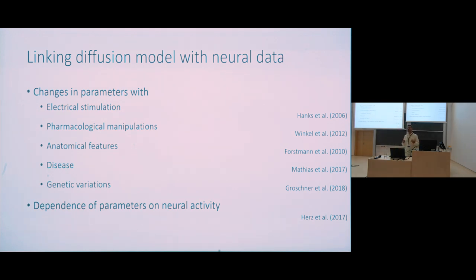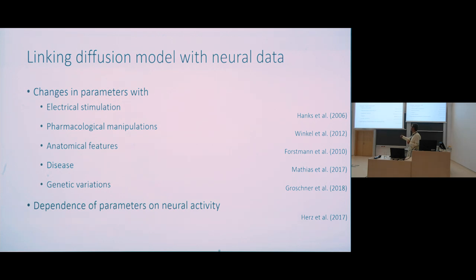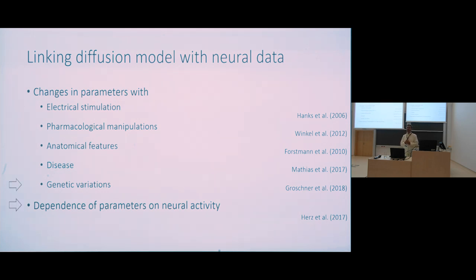Initially the diffusion model was used in purely behavioral studies, but with time neuroscientists started to employ it to understand the neural basis of decision making. There are two main approaches for linking this model with neurobiological data. The first is to look at how the parameters of the diffusion model change with various manipulations such as electrical stimulation and pharmacological manipulations, or how the parameters correlate with various features of the brain such as anatomical features, disease state, or genetic variations. More recently, another approach has been developed which tries to understand the dependence of parameters on neural activity.